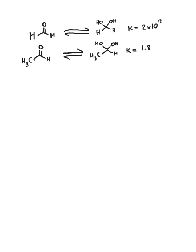If we look at something like acetaldehyde, which has now a methyl group that is able to increase the electron density on that carbon of the carbonyl, the equilibrium constant decreases drastically to just 1.3, meaning that there is a lot less hydrate present.